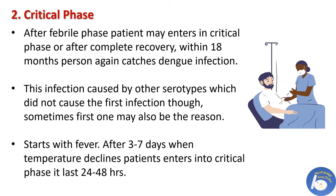The next stage is the critical phase. Generally patients recover after the febrile phase, but in some cases symptoms worsen and patients enter the critical phase. Alternatively, within 18 months of recovery from the first infection, a secondary infection may occur — most often involving a different serotype of dengue virus. The critical phase also starts with fever, and after three to seven days of infection the temperature starts to decline, at which point the patient enters the critical phase, which lasts for 24 to 48 hours.